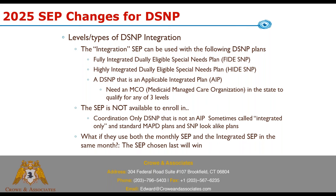If people use both the monthly SEP and the integration SEP — for example using the monthly one to disenroll from an advantage plan and go back to original Medicare, and then as a full dual using the integration SEP — whatever election is last will win. You're going to get scenarios like that.